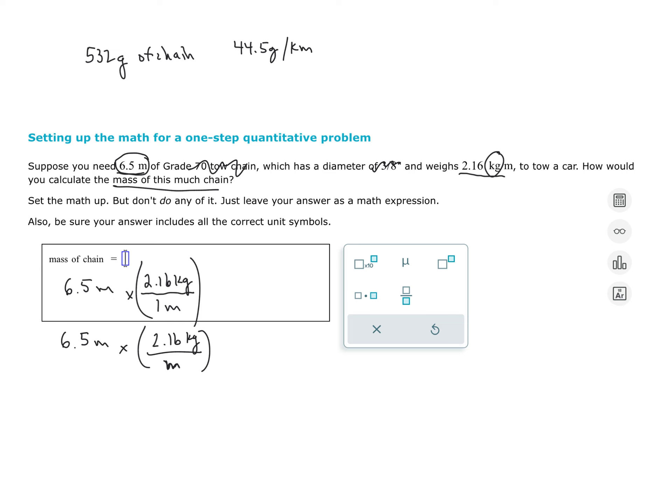So for this problem, it's going to be very much the same. We're going to start with the mass of the chain, the number that we have with only one unit assigned to it, 532 grams. And we want to somehow convert this into a distance, into kilometers.